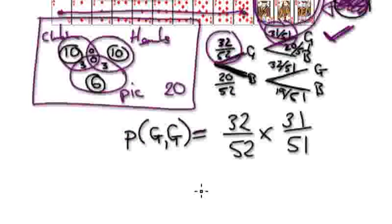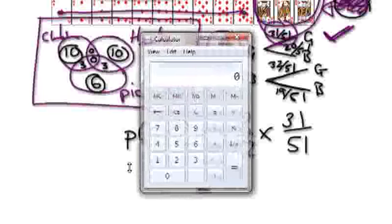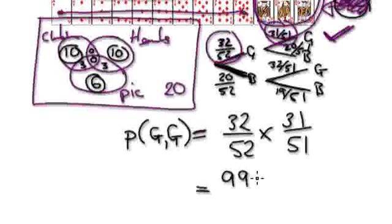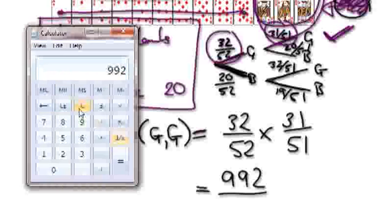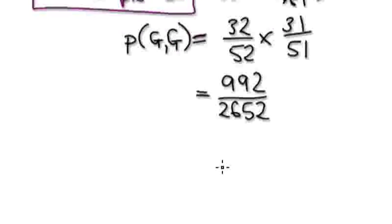So that equals 32 over 52 times 31 over 51. Let's jump to a calculator. Top times top: 32 times 31 equals 992. Bottom times bottom: 52 times 51 equals 2652. So 992 over 2652 will be your final answer.